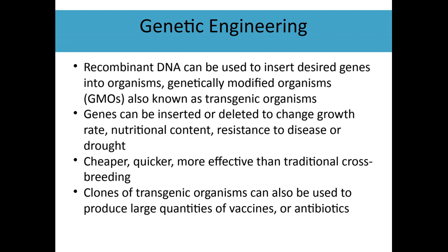Clones of transgenic organisms have also been used to create large quantities of things like vaccines or antibiotics. If you put a gene into bacteria that breed very quickly, they can just keep making that over and over, getting really large quantities — faster than if you were trying to grow them in a lab in other ways.